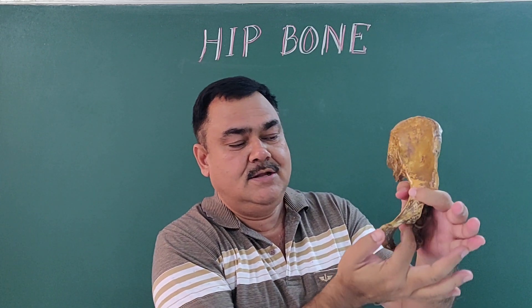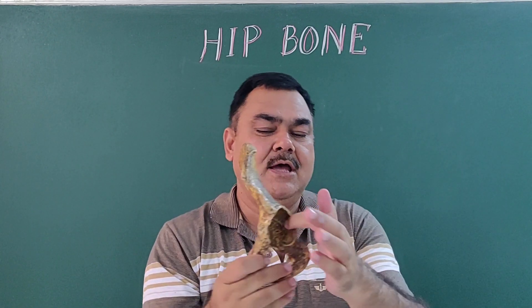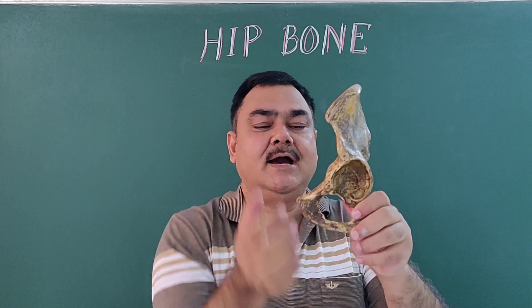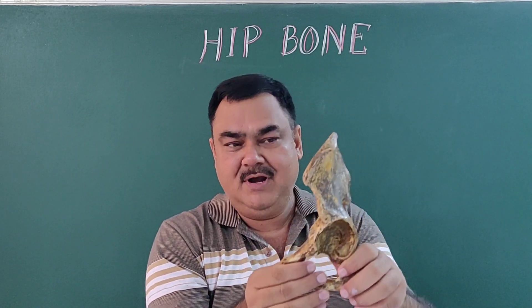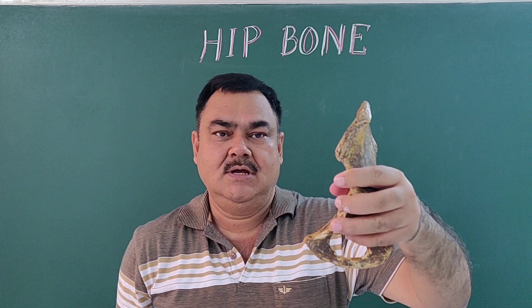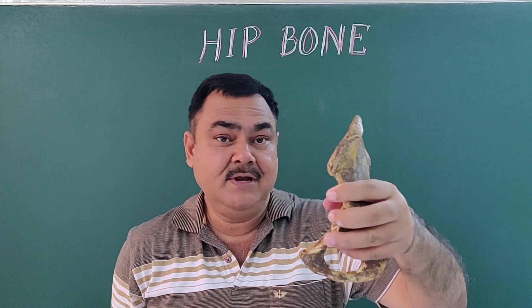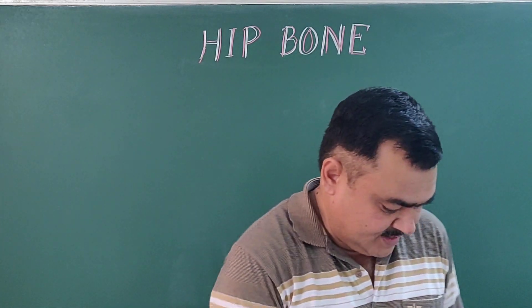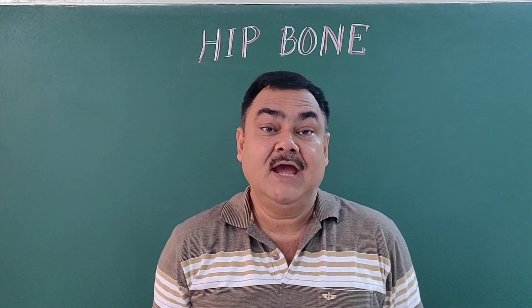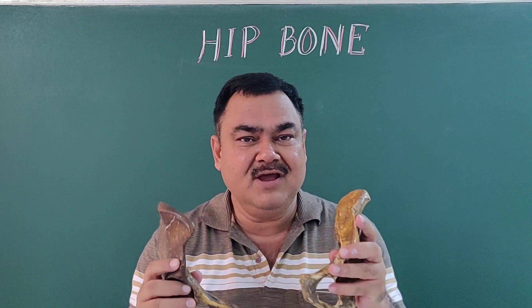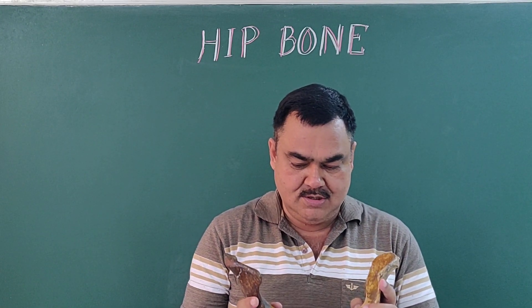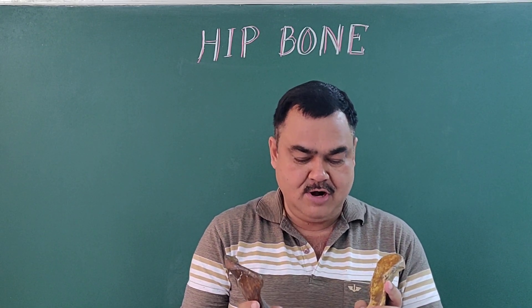Here you can see the acetabulum, the iliac crest, and the obturator foramen on this bone — so this bone is the left hip bone.